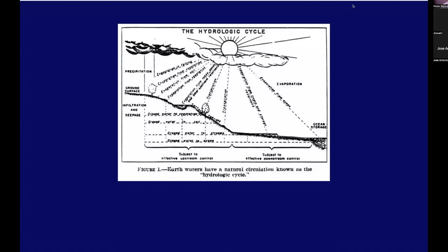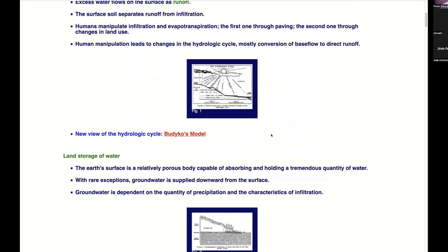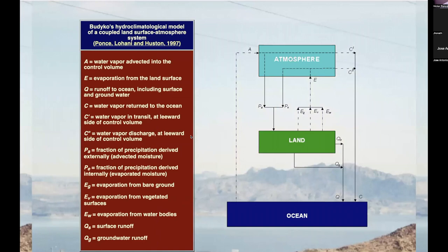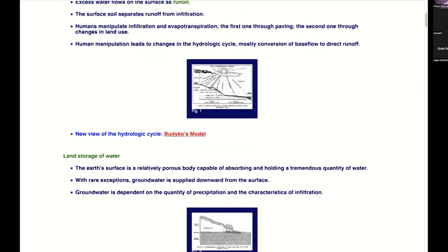Here is the hydrologic cycle from this report, and that has been improved with the Budyko model — a cybernetic hydrologic cycle. We cover that in our hydrology course.